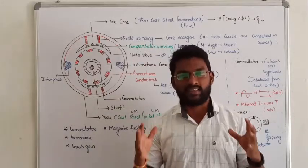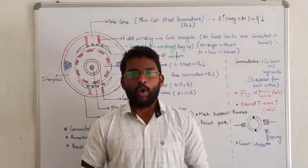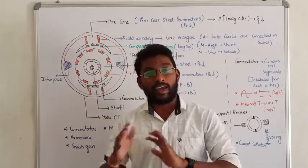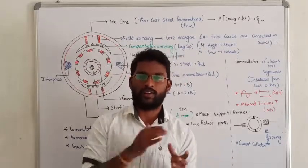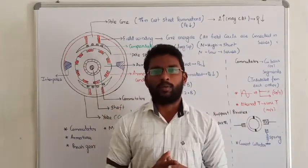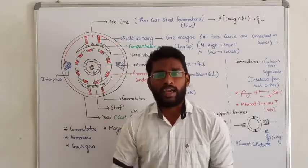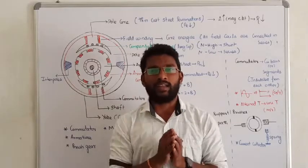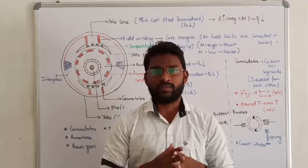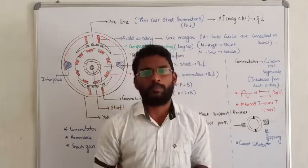So let us see the basic construction of DC machine. Normally, we see the AC machine and the DC machine — the difference between the AC machine and the DC machine. As in any electrical machine, energy conversion or energy will be transformed from one part to another part. Like in a transformer, electrical energy is simply transformed from primary medium to secondary medium. There is no mechanical terms — just the electrical power is transformed from primary to secondary through the medium of magnetic.